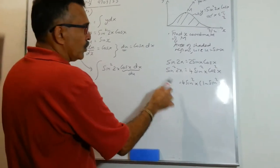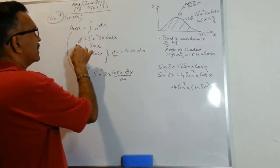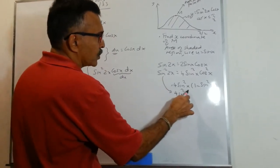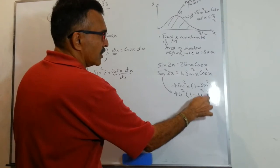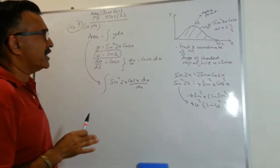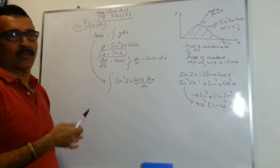If u equals sin x, that's the substitution we are using, so this thing becomes 4 u squared times 1 minus u squared. Now everything is going to fall into place. The only thing is let's adjust for our limits of integration.